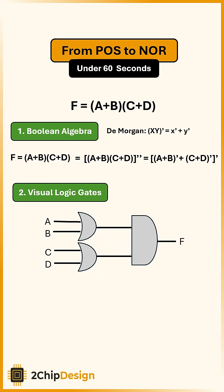Then we apply De Morgan's theorem to the inside. That gives us A or B NOT or C or D NOT all of it NOT.